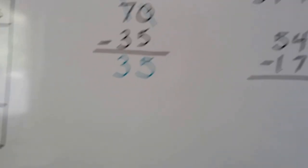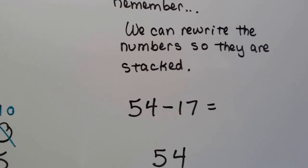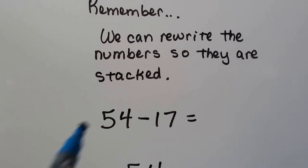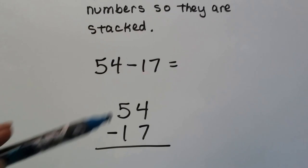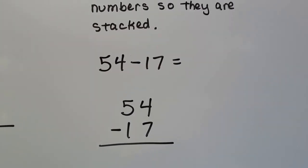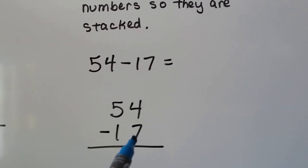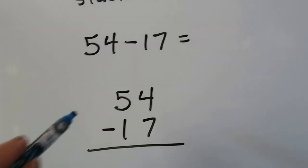Now remember, we can write the numbers so that they're stacked. If we see them written like this, we can rewrite the number sentence so it's stacked so that we can regroup. We see the 7 is larger than the 4, so we need to regroup.